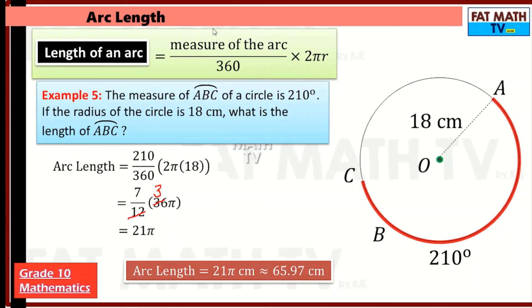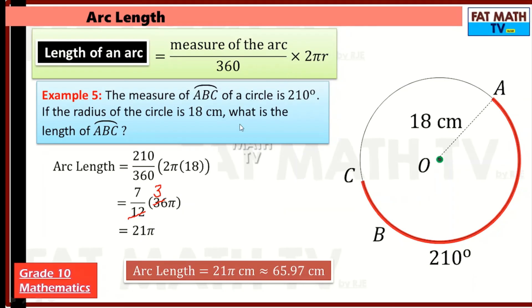To solve arc length, just remember this formula: measure of the arc over 360 degrees times the circumference of the circle that contains the arc — that's measure of the arc over 360 times 2πr. That's it for this video. I hope that you learned. Bye!